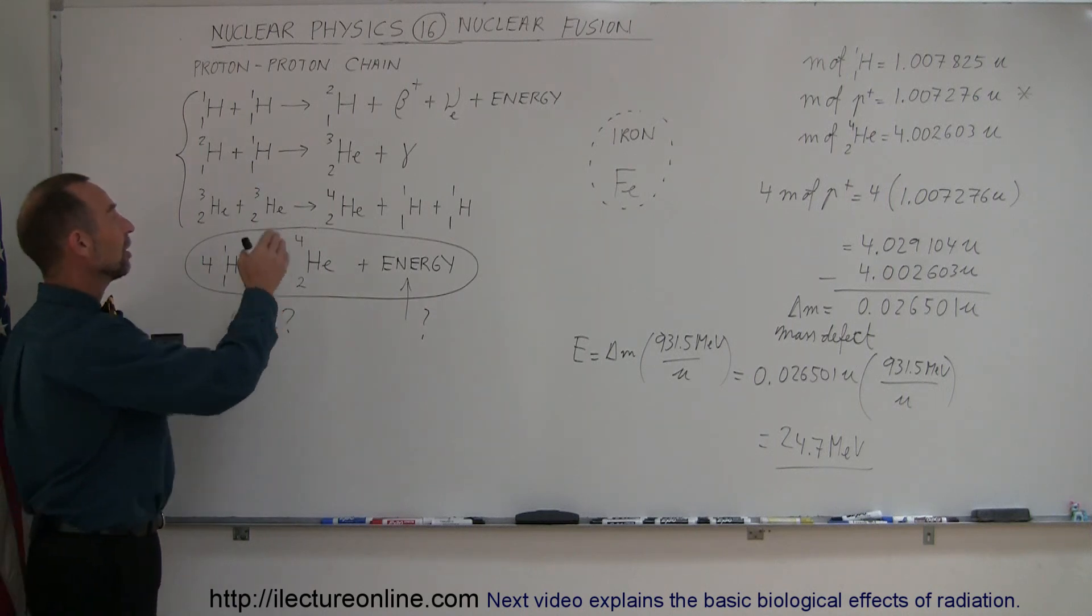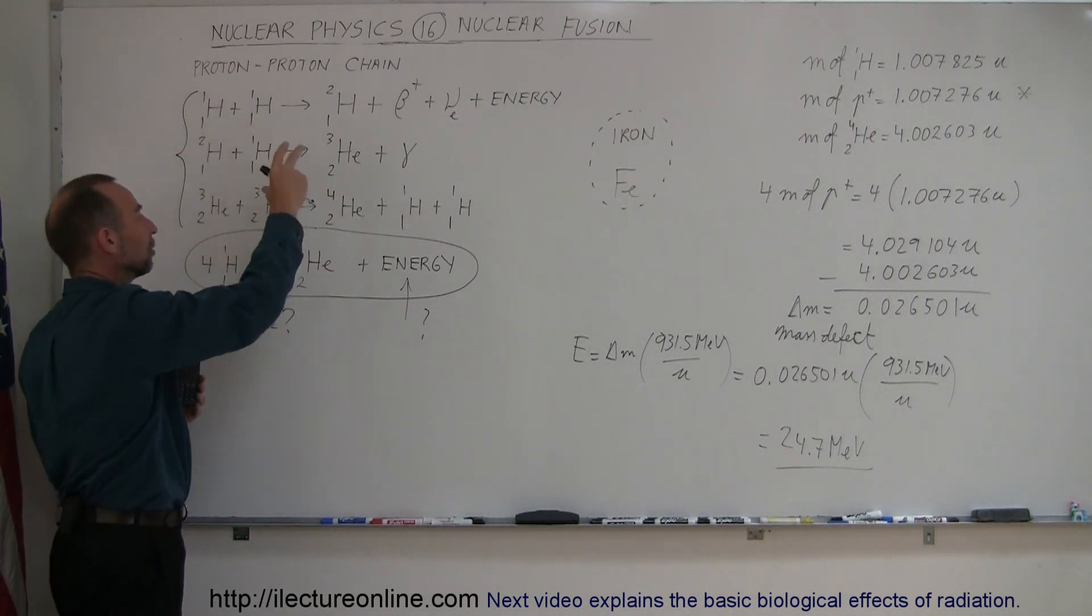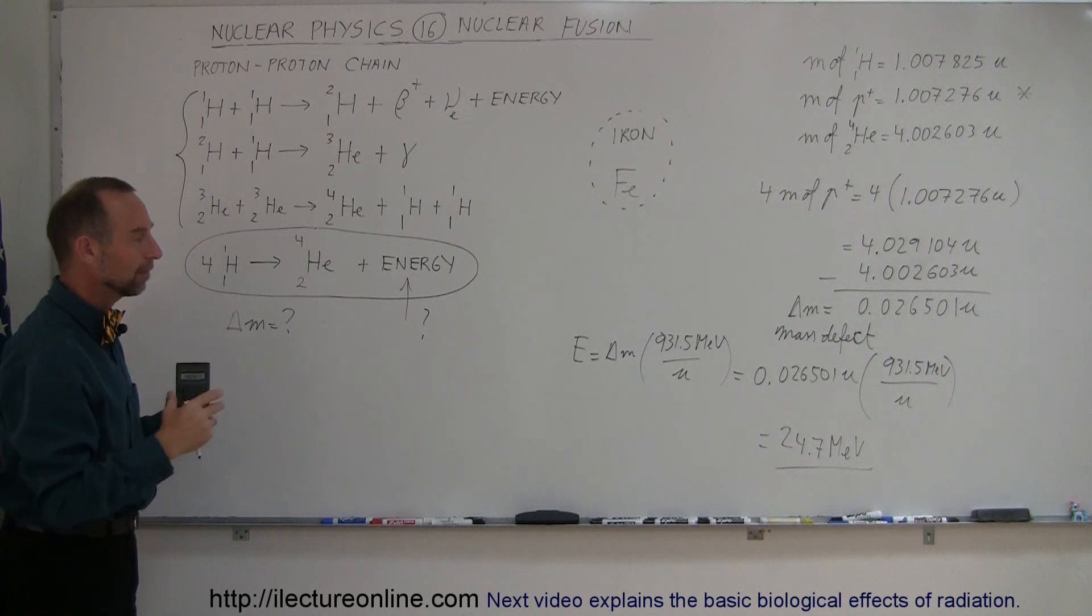Stars produce their enormous quantity of energy by converting hydrogen into helium at their cores, the same in our sun. That is the energy production used in hydrogen bombs.